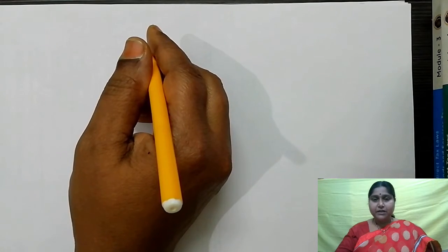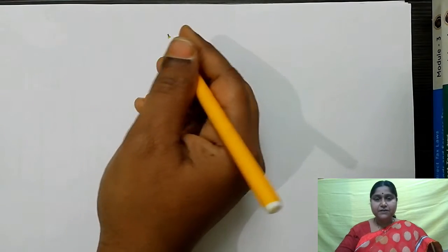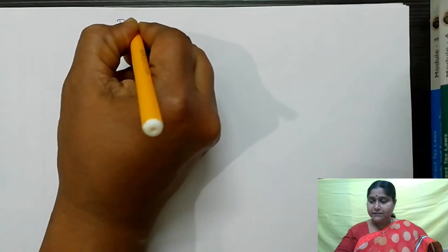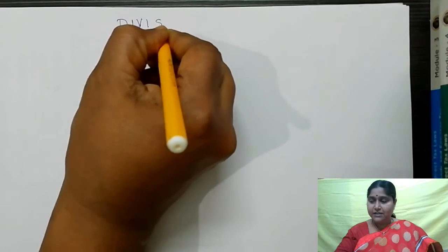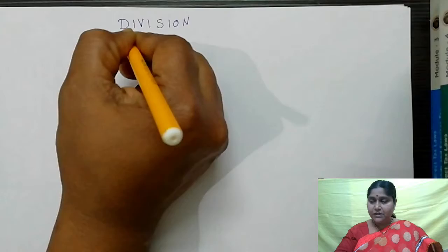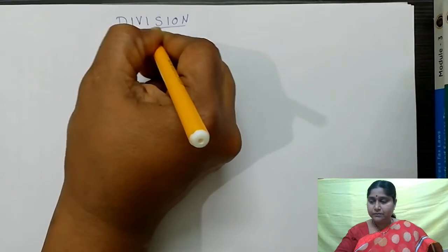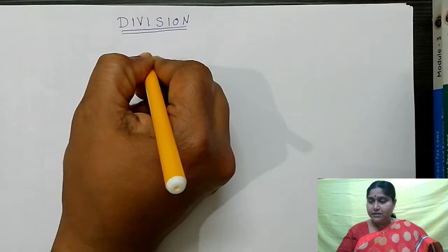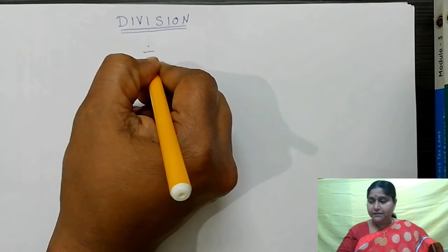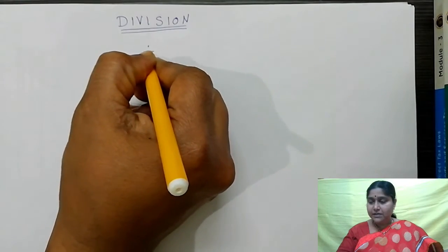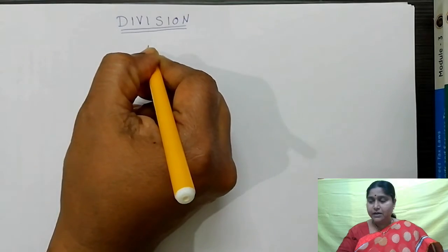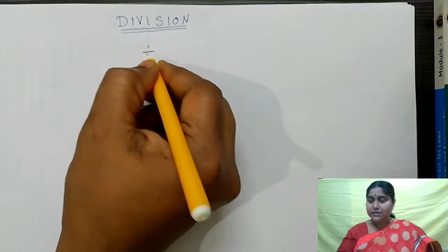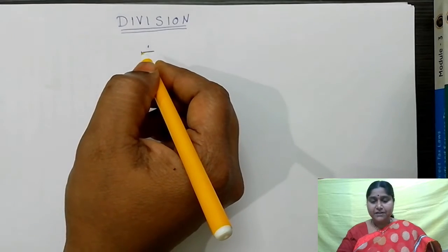I will explain clearly. First of all, divisions: D-I-V-I-S-I-O-N. This is the sign for division. You put a minus subtraction sign with one dot up and one dot down. This is the sign for division.